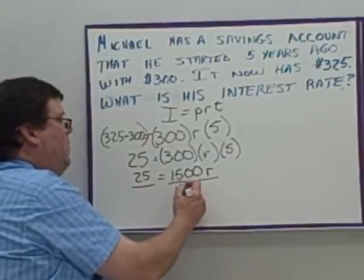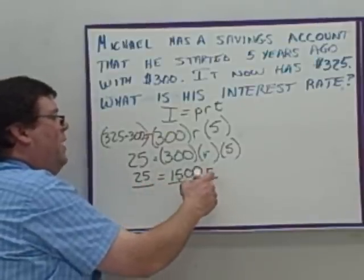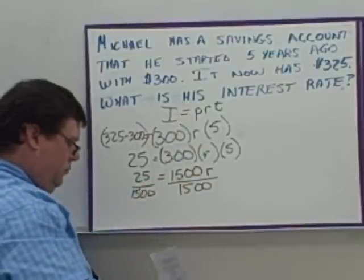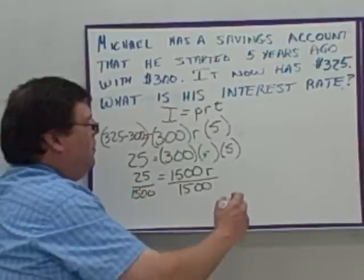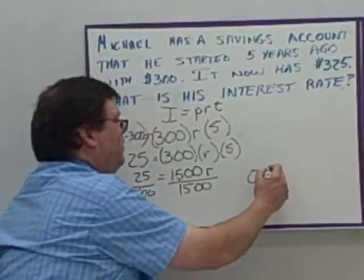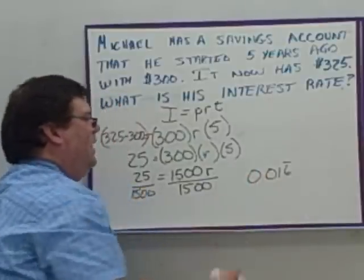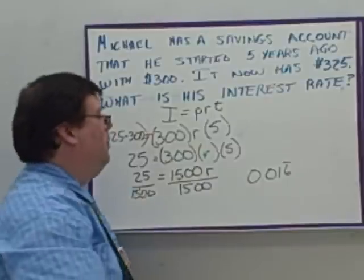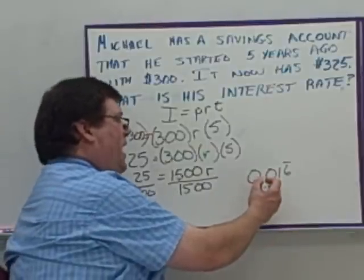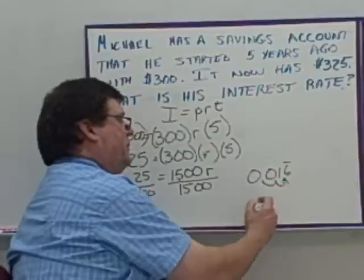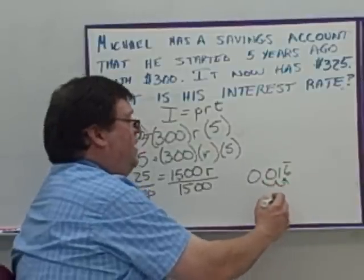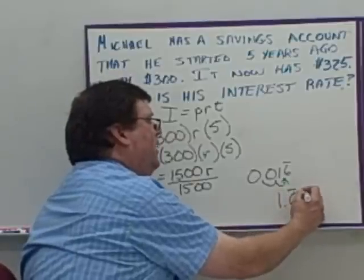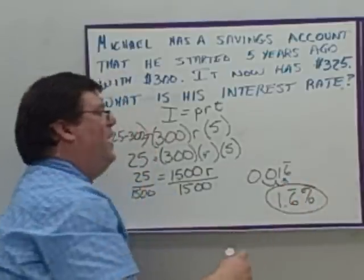Then I divide both sides by 1,500 to get R alone. I get 0.016 repeating, which as a percent — multiply by 100 — gives 1.6 repeating percent.